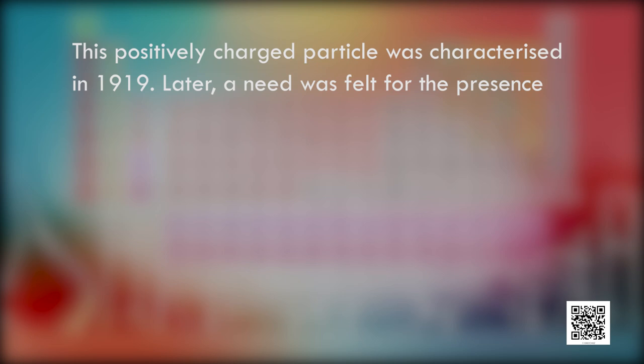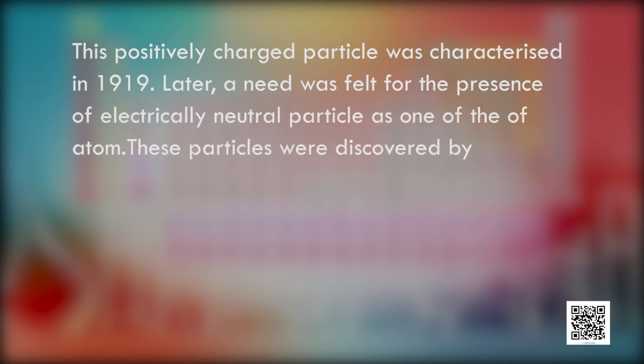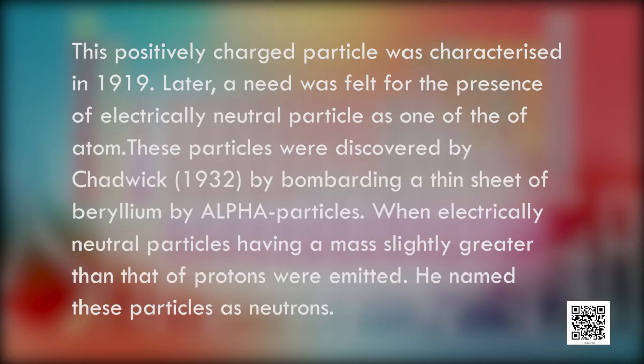A need was felt for the presence of electrically neutral particles because the mass of electrons and protons together was not accounting for the total mass of the atom. New particles were discovered by Chadwick in 1932. He bombarded a thin sheet of beryllium with alpha particles, upon which electrically neutral particles having a mass slightly greater than that of the proton were emitted. He named these particles neutrons.